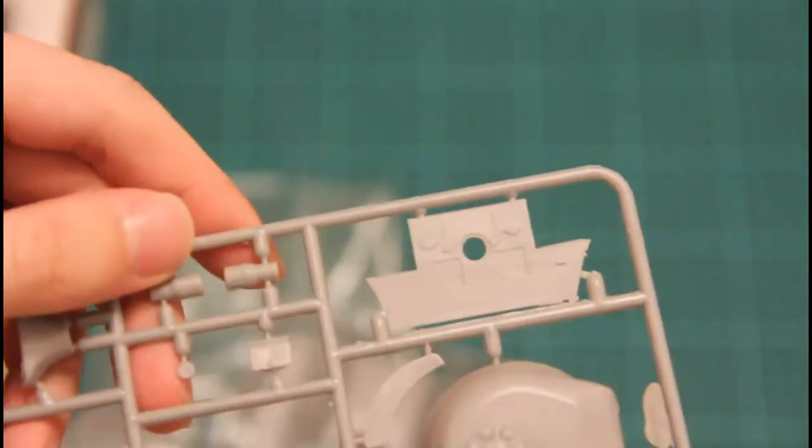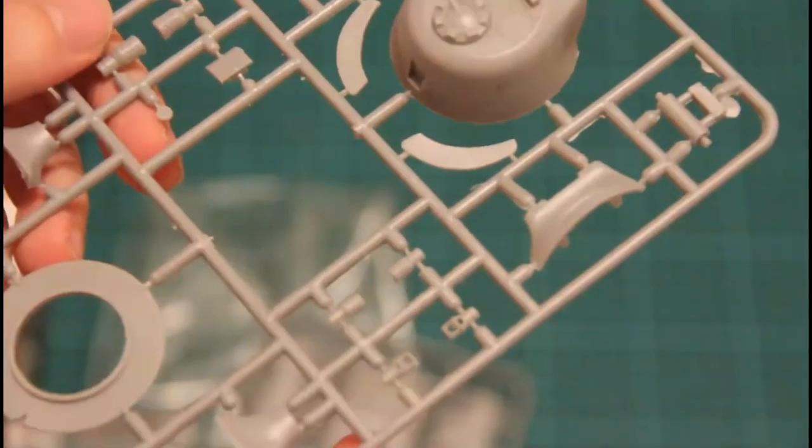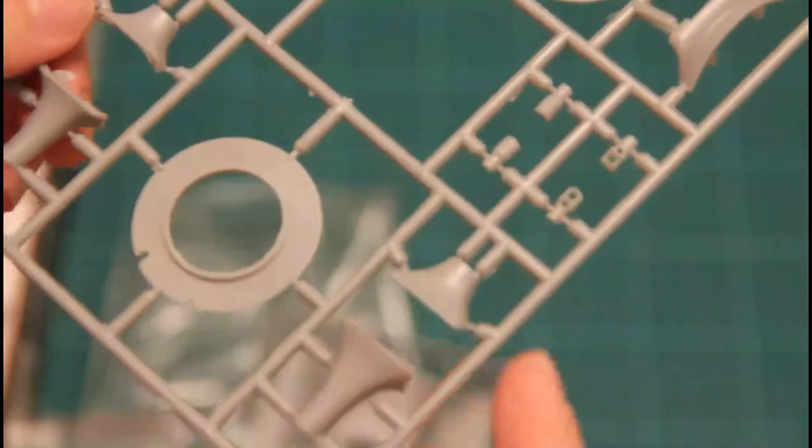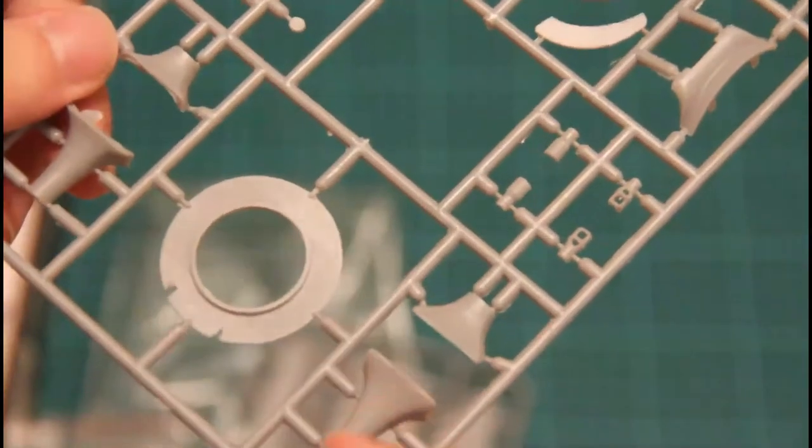Then we have separate sprues with rear back plate, armor plate let's say, turret part and some other elements for the turret part and gun muzzle.